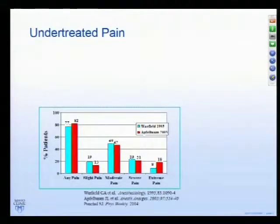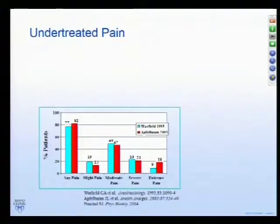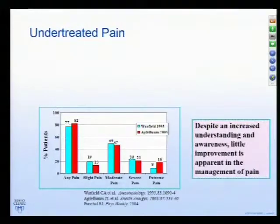Pain being under-recognized or under-treated: Warfield in 1995 surveyed about 130 acute pain services throughout the United States and looked at adult attitudes and incidence of pain in the post-surgical population. He found that about 77 to 80 percent of patients have pain after surgery, and a large portion of those have moderate to extreme pain. In 2000, within five years of that study, Congress declared war on pain — it was the decade of pain in research, and pain became the fifth vital sign. About three years into that, Applebaum again looked at the incidence of pain in the post-surgical population. Despite this huge increase in national initiatives to recognize and treat pain, we weren't doing much better. In fact, in some cases the incidence and severity of pain was actually going up.